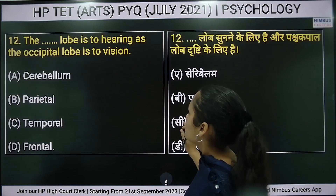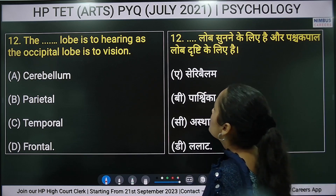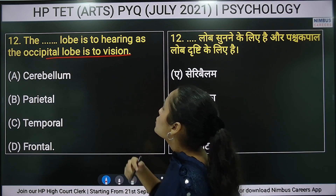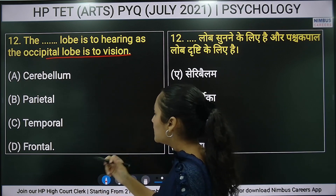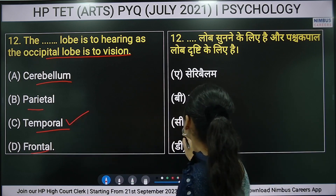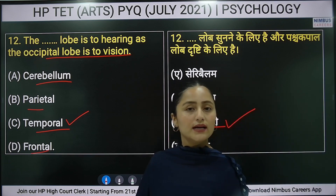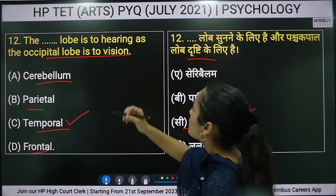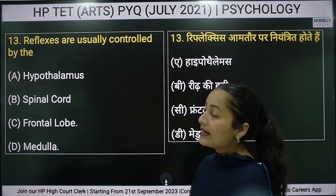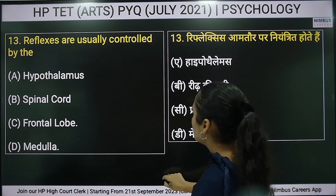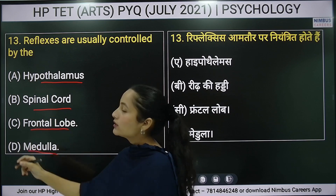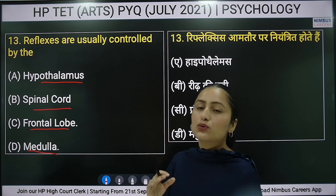The twelfth question: which lobe is responsible for hearing and which for vision? The temporal lobe is for hearing. The thirteenth question: reflexes are usually controlled by — options are hypothalamus, spinal cord, frontal lobe, or medulla. The right answer is spinal cord.